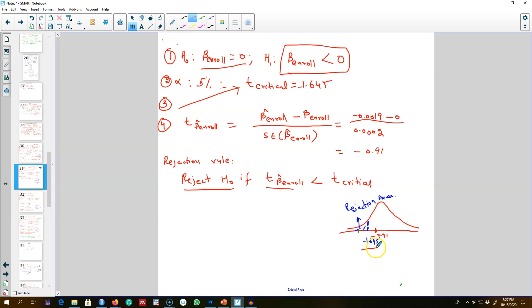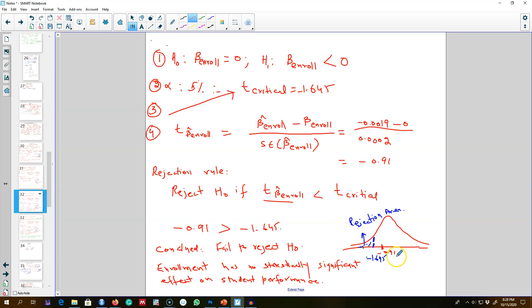But we see that our calculated value is minus 0.91, which is greater than the critical value minus 1.645. So which means this value 0.91 doesn't fall into the rejection region.